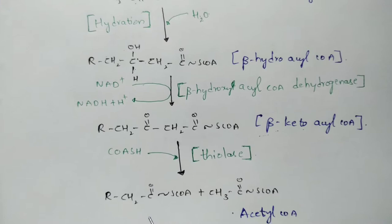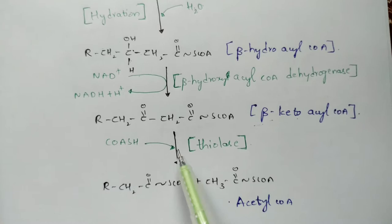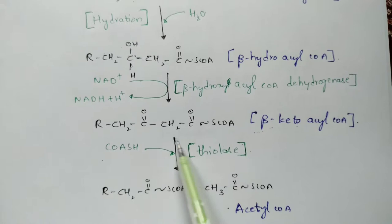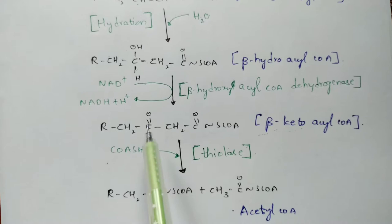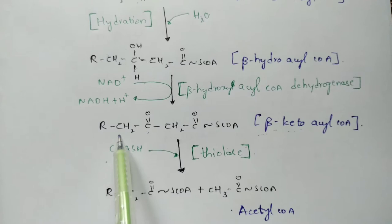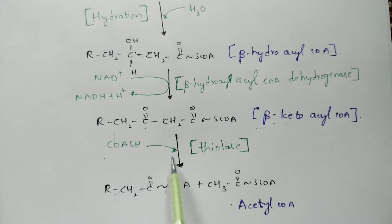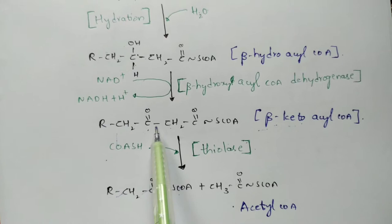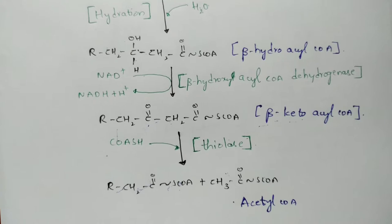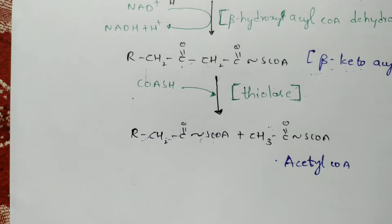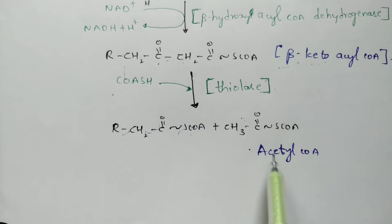Beta-ketoacyl-CoA, under the enzyme thiolase, with coenzyme A utilized, undergoes cleavage. The structure splits: one part forms R-CH₂-CO-SCoA (a shortened acyl-CoA) and another part combines with coenzyme A to form acetyl-CoA (CH₃-CO-SCoA). So two products are formed: acetyl-CoA and a shorter acyl-CoA. This is the third step — the beta oxidation proper — which takes place in the mitochondrial matrix.